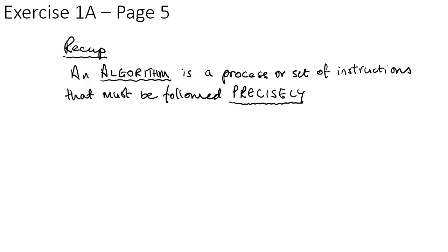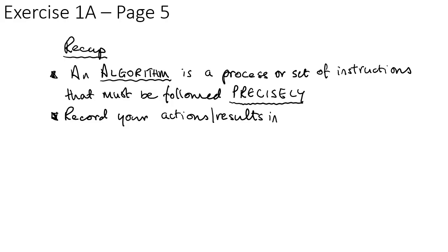You should now be able to do exercise 1A on page 5. A quick recap: an algorithm is a process or a set of instructions, and the most important thing is they must be followed precisely — don't skip steps, don't try shortcuts. Always follow the steps exactly as written. It also helps to record your actions and results in a table, even if the question doesn't ask you to — it keeps you organized and ensures you don't miss any steps.